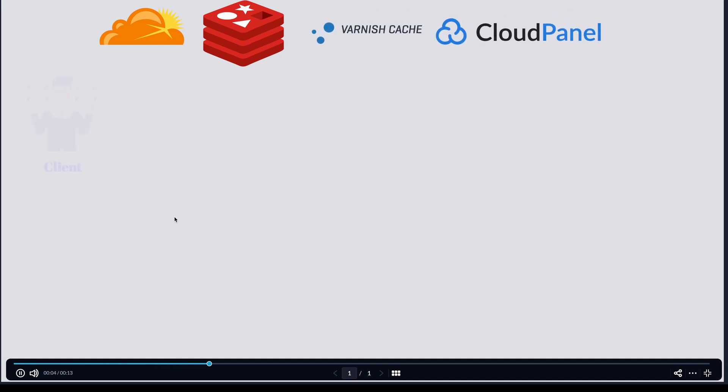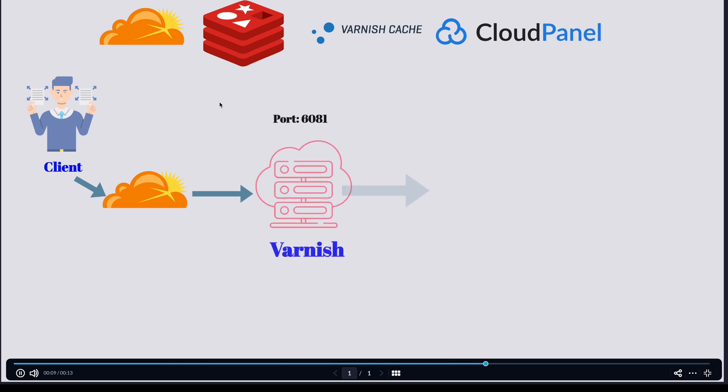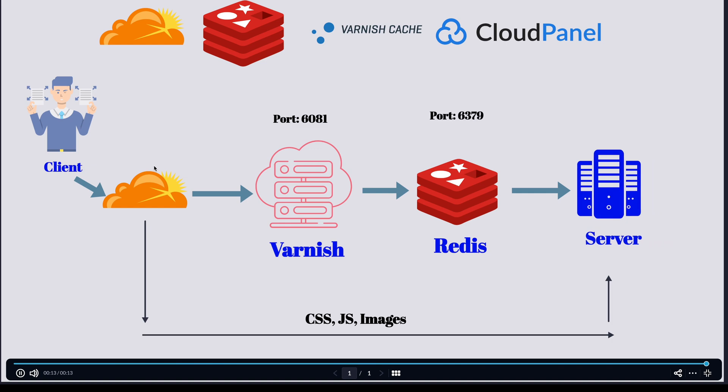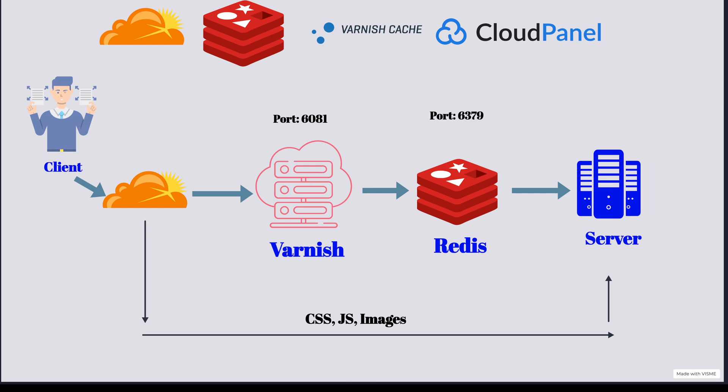I have here a presentation that will show you exactly what we're going to configure in this video. To have this working we'll need to use Cloudflare, Redis, Varnish Cache and Cloud Panel. What will happen is the client will come to Cloudflare, where Cloudflare will store the cached version of your page together with the CSS, JS and images in their CDN.